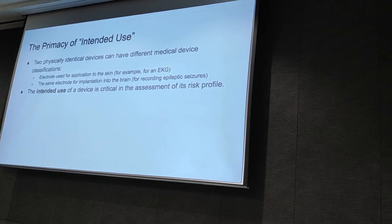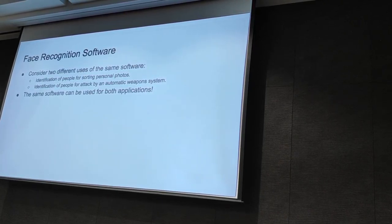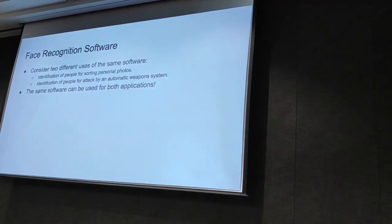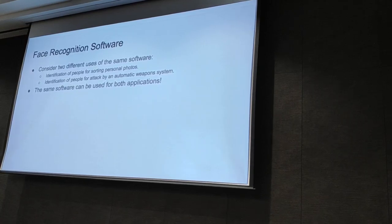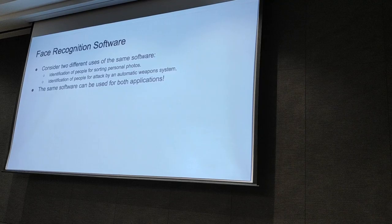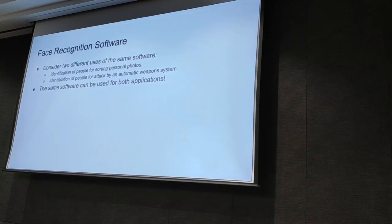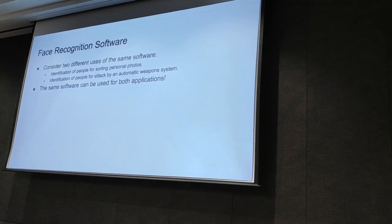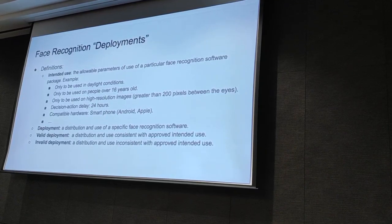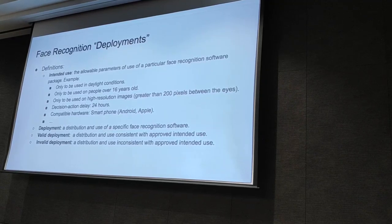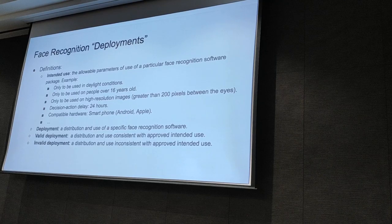When you say this out loud, it sounds completely obvious. But my argument is that we need to start defining these things and making them clear to everybody so that we're all on the same page. Consider two different uses of the same software: I can use software to identify people for sorting personal photos, and I can identify people for attack by an automatic weapon system. These are clearly the two extremes of the risk categories. If I make a mistake sorting people's photos, it's not the end of the world, but if I kill somebody by misidentifying them, that's pretty tragic. So we're actually not trying to regulate software in terms of a binary file or a trained algorithm — we're trying to regulate a combination of software and the context in which it's used. We call this a deployment.